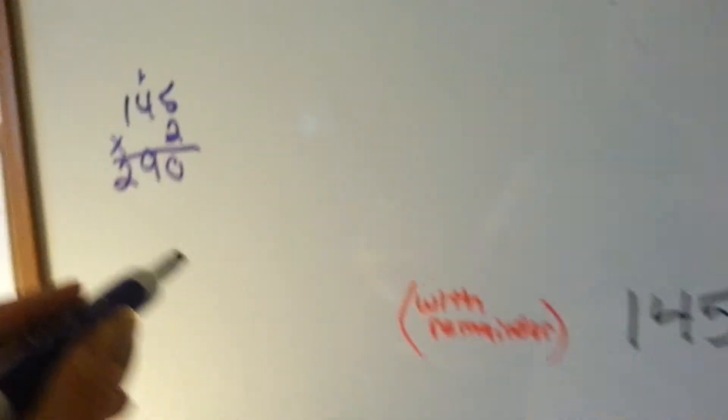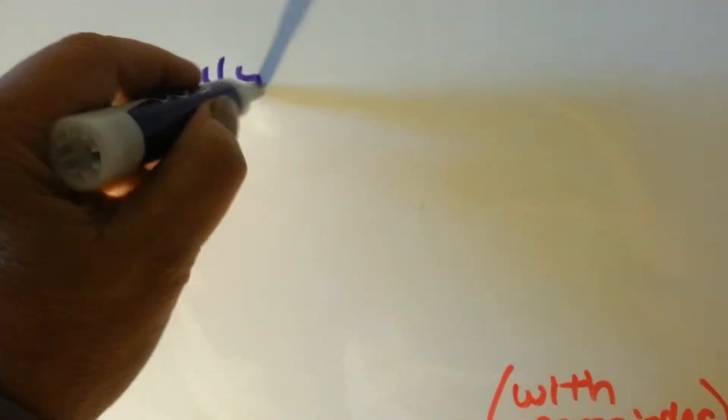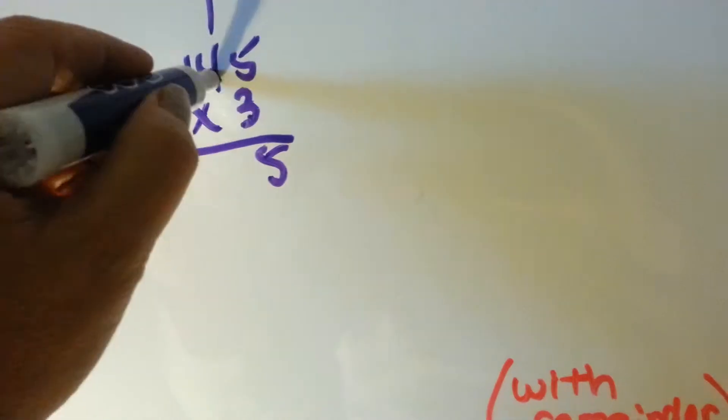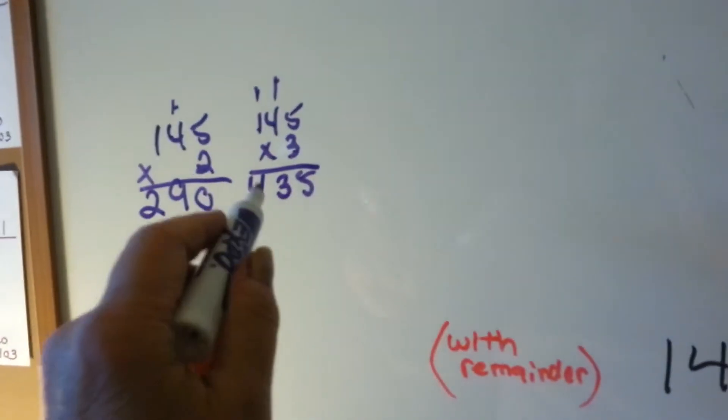2 times 4 is 8, 9. So, that's 290 if we do it times 2. Can we fit another one? You want to see? We might be able to use this in the future anyway. Okay. So, if we times it by 3, it's 435. So, we're going to go with the 2.